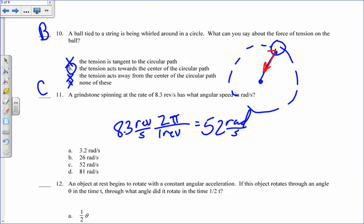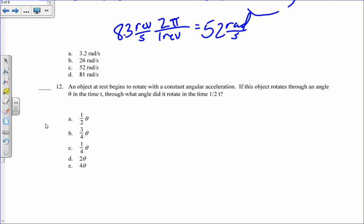Object at rest begins to rotate with an angular acceleration. If it rotates through an angle theta in time t, what angle does it rotate in time half t? I know that theta is related to t by this expression. Omega naught is zero because it's initially at rest. So this simplifies to one half alpha times t squared. If it rotates through theta in time t, through time half t, it's going to rotate through a quarter theta. So that's c.